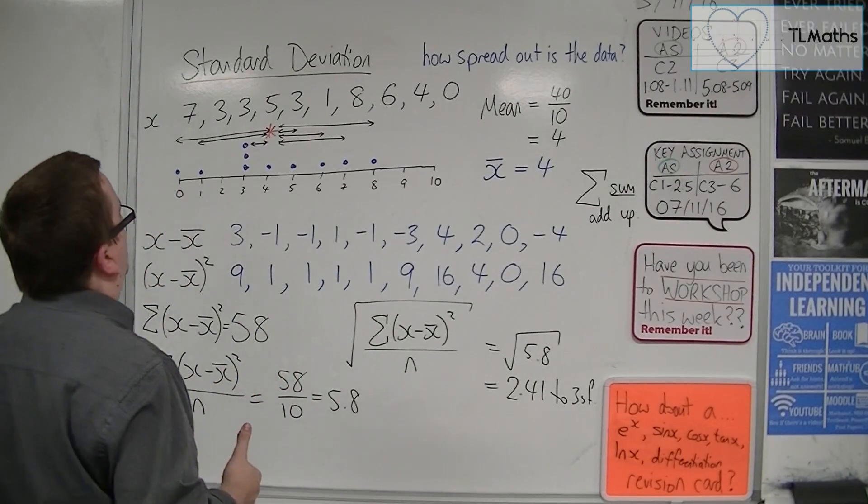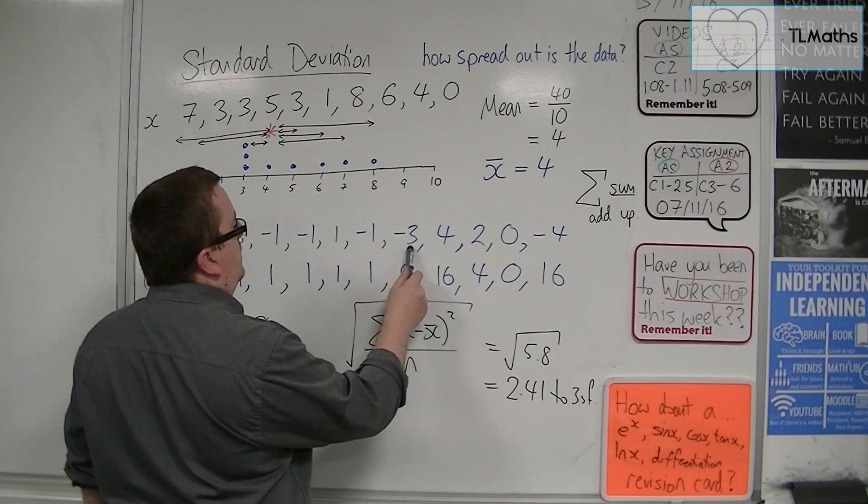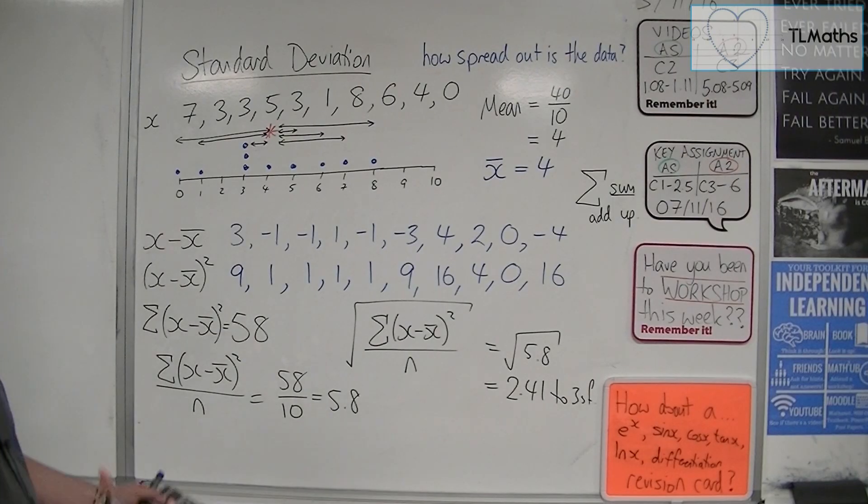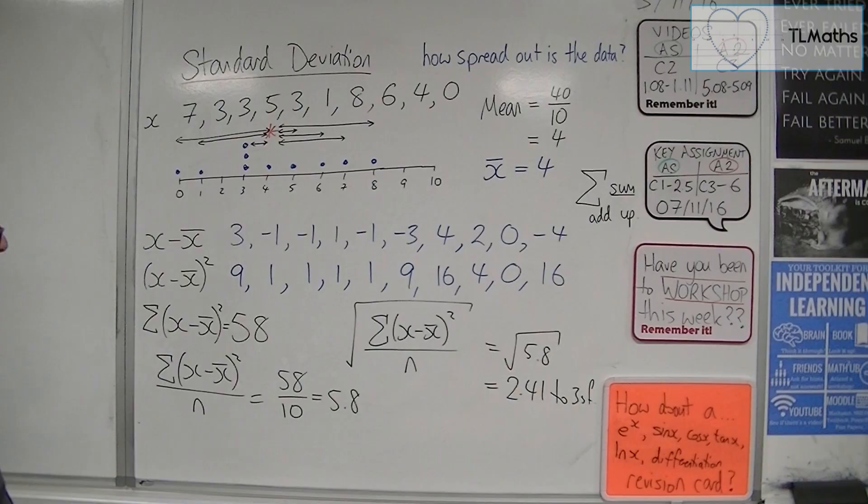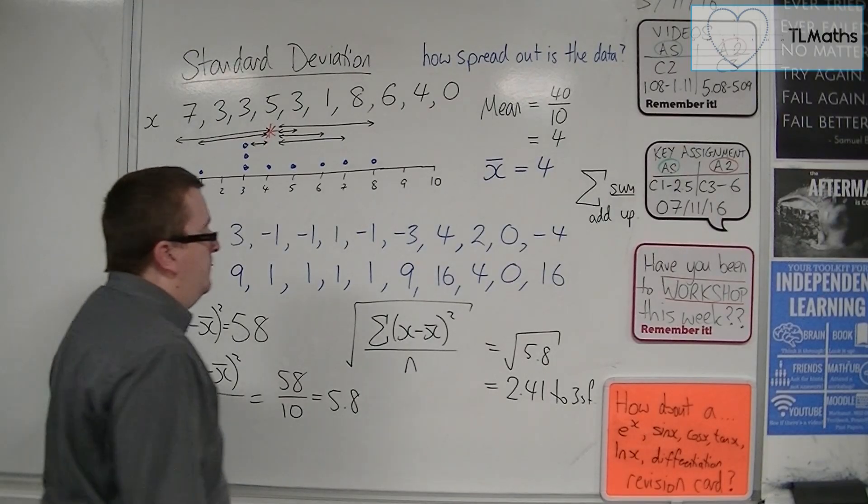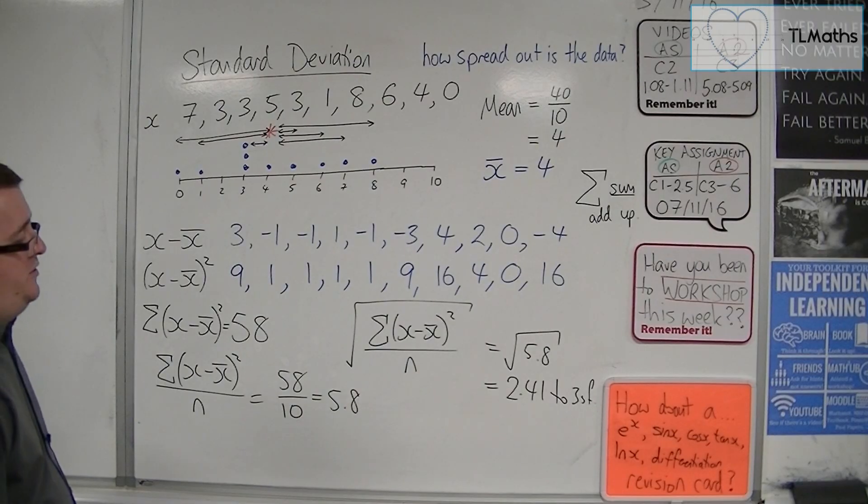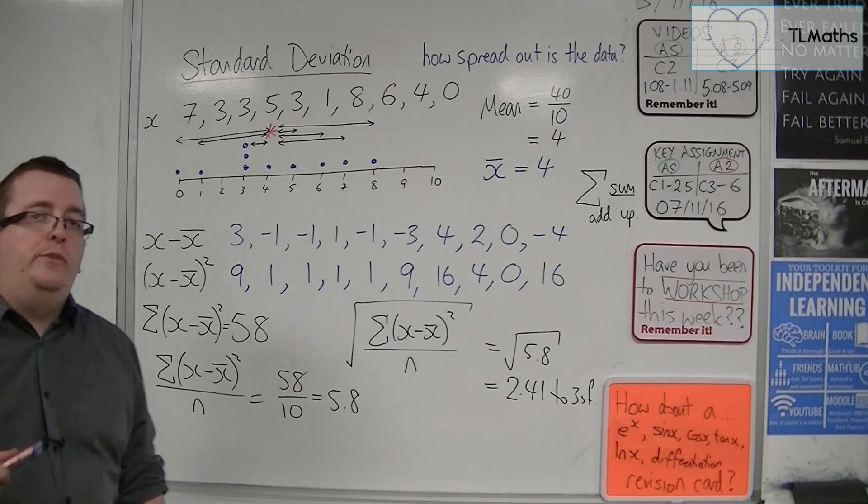Now, does that make sense? Looking at each of these gaps, 3, 1, 1, 1, 1, 3, 4, 2, 0, 4, 2.41. Seems reasonable.